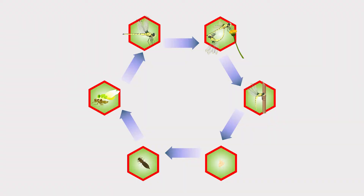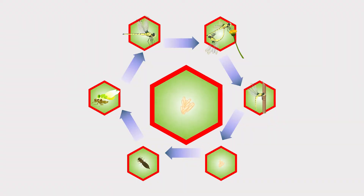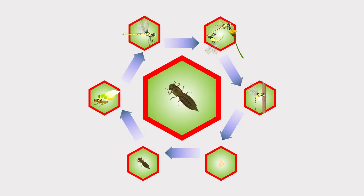Did you know some insects start their life in water? Let's look at the dragonfly life cycle. It starts with an egg, then a nymph, and then the adult.